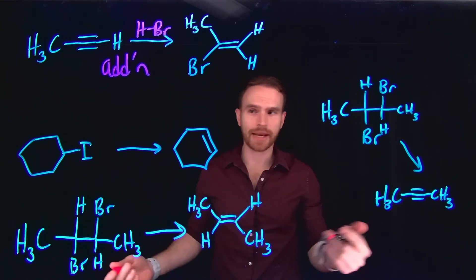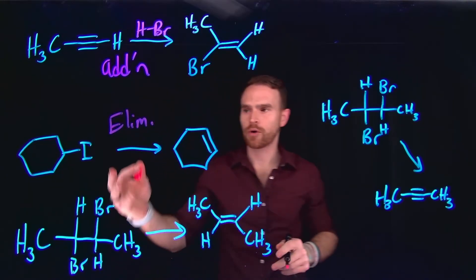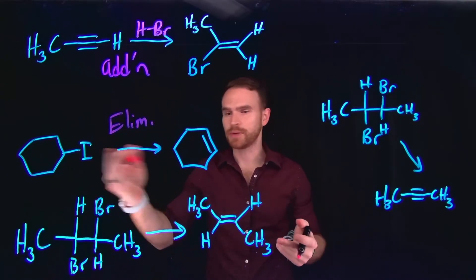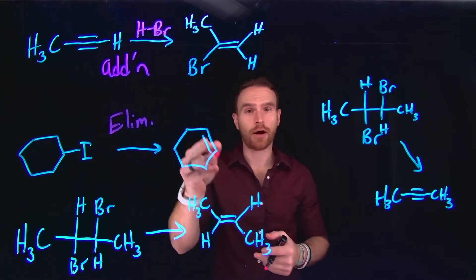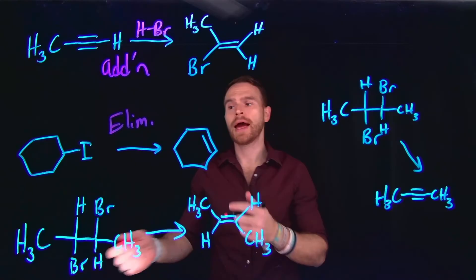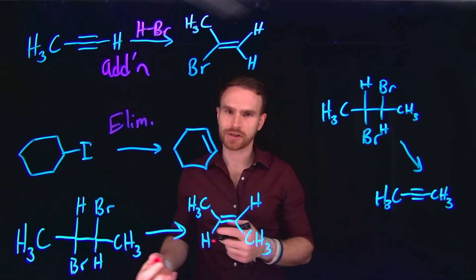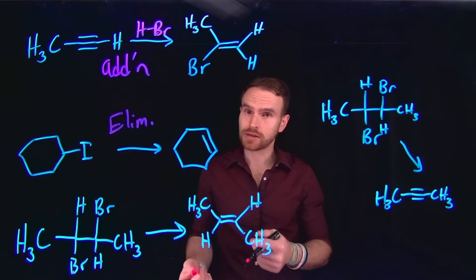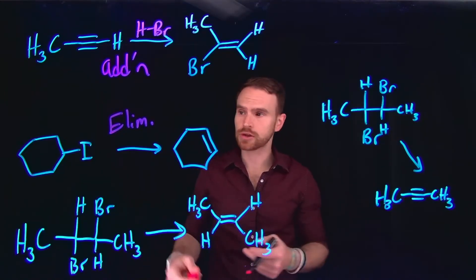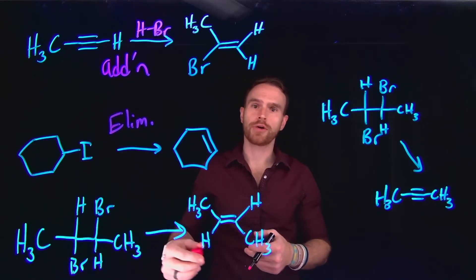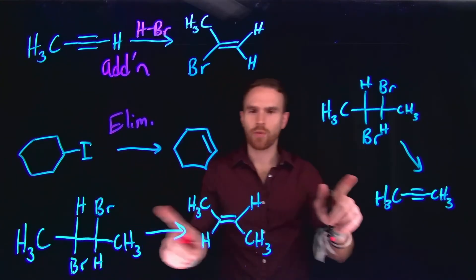The next one is going to be an elimination reaction, where a leaving group is being removed, and what you're left with instead of an alkane is going to be an alkene where this double bond has formed. That's a quick way to discern that this is an elimination reaction. Whether or not this proceeds via an E1 or E2 mechanism is going to depend on which reaction conditions you're using, what your substrates are, and whether or not you can form stable carbocations.